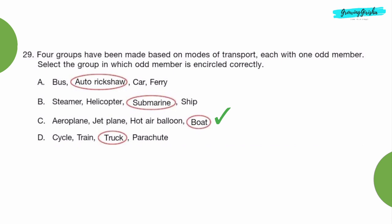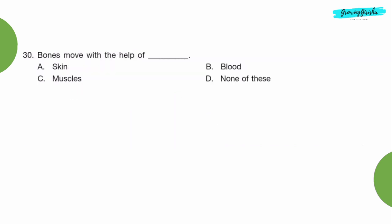Question 30: Bones move with the help of dash. Option C, muscles.